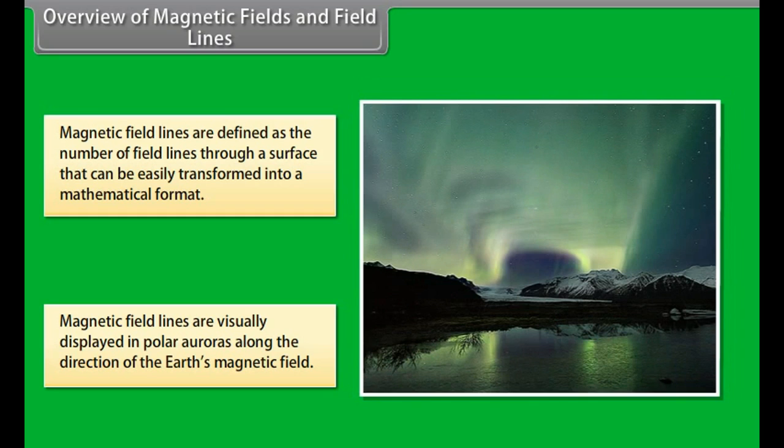Magnetic field lines are visually displayed in polar auroras where visible streaks of lines are created along the direction of Earth's magnetic field.